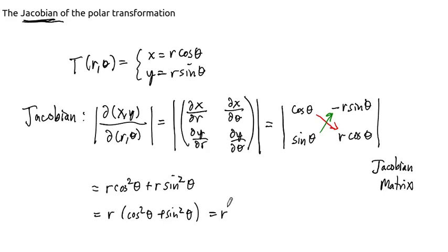So the Jacobian of our transformation that takes points in the polar plane to points in the xy plane, the Jacobian of this transformation is just r.